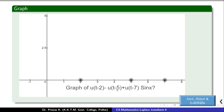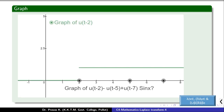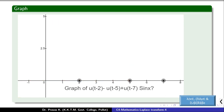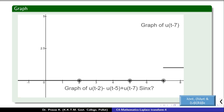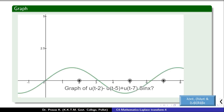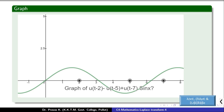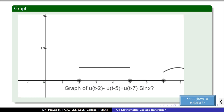We can see u of t minus 2 minus u of t minus 5: from 2 onwards it has value 1, and from 5 onwards u(t-5) has value 1, so the difference is 1 between 2 and 5, and 0 elsewhere. Then u of t minus 7 into sin(x) contributes sin(x) from 7 onwards. The final graph shows u(t-2) minus u(t-5) plus u(t-7) into sin(x).